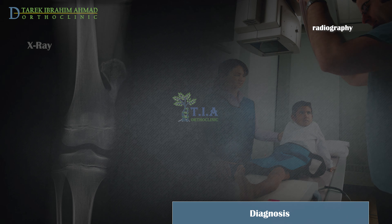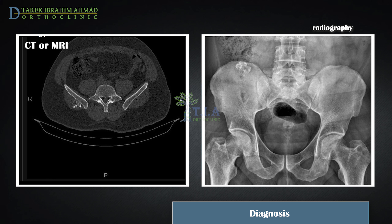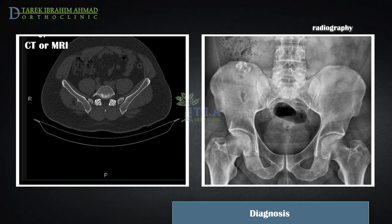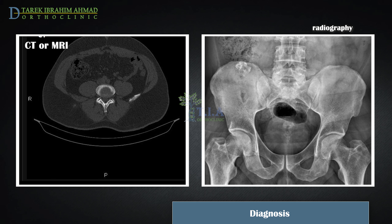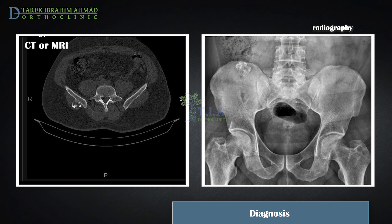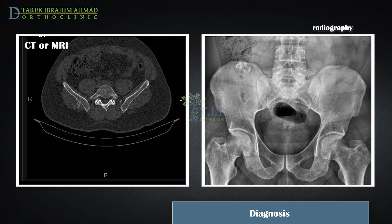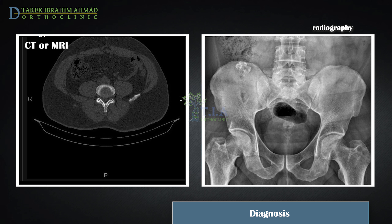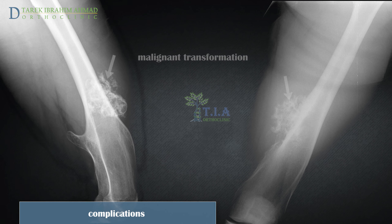If the doctor suspects osteochondroma, he will order an imaging test. In almost all cases, an osteochondroma can be diagnosed using an X-ray. Magnetic resonance imaging (MRI) is warranted when there is a concern for adjacent soft tissue impingement, new focal pain at the site, or concern for chondrosarcomatous transformation. MRI is particularly useful in identifying tumors in areas that are difficult to image on a plain X-ray.